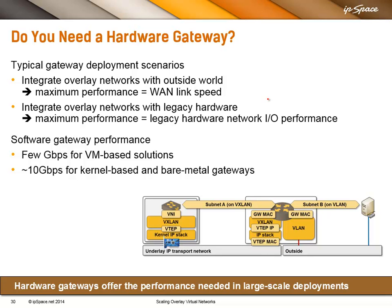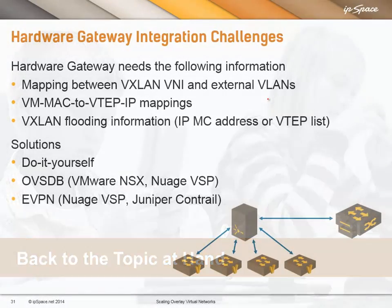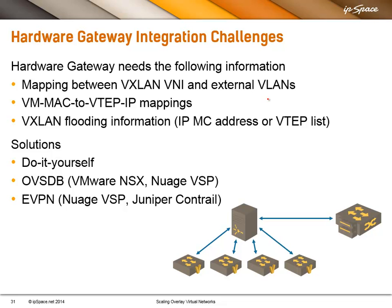Would you configure and manage the gateway out of the SDN controller? The hardware gateway obviously needs the mapping between the overlay segment and the VLAN number, mappings between the MAC addresses of the VMs and IP addresses of the hypervisors, and some flooding information — either an IP multicast address if you use IP multicast-based VXLAN, or a list of hypervisors if you're using source node-based packet replication that most non-multicast-based platforms use.